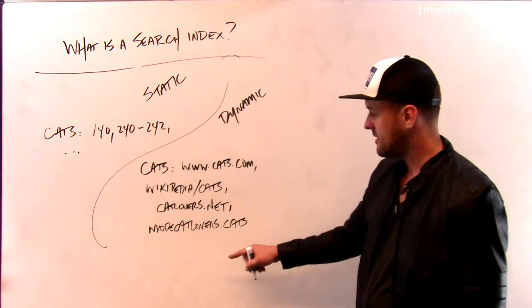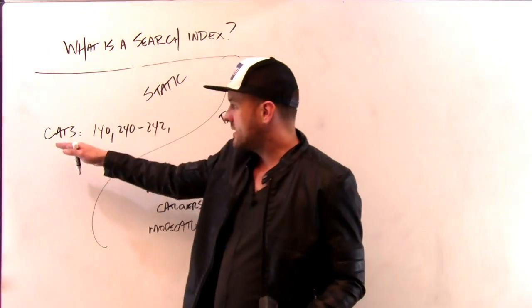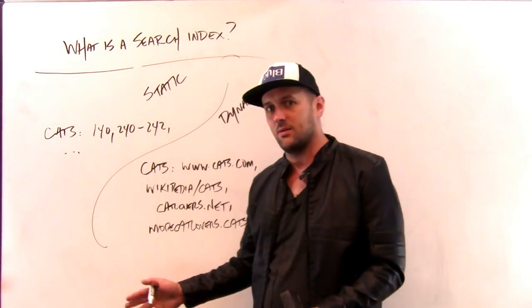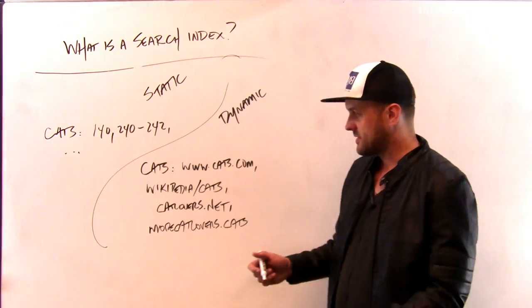If they didn't, they should. So morecatlovers.cats now needs to be part of this. A book search index is easy. It's just sitting there, because the book contents are known, they're printed, the index comes along with it. But the web search index has to be built up dynamically.